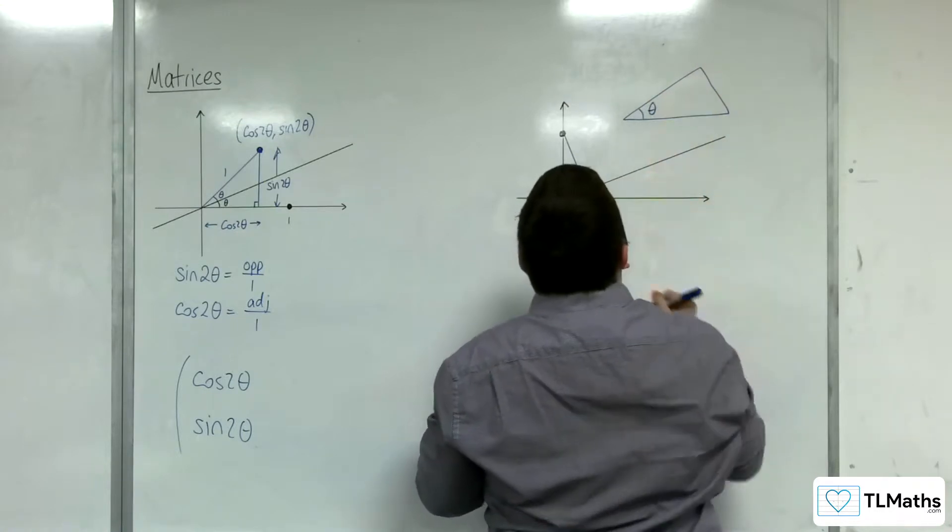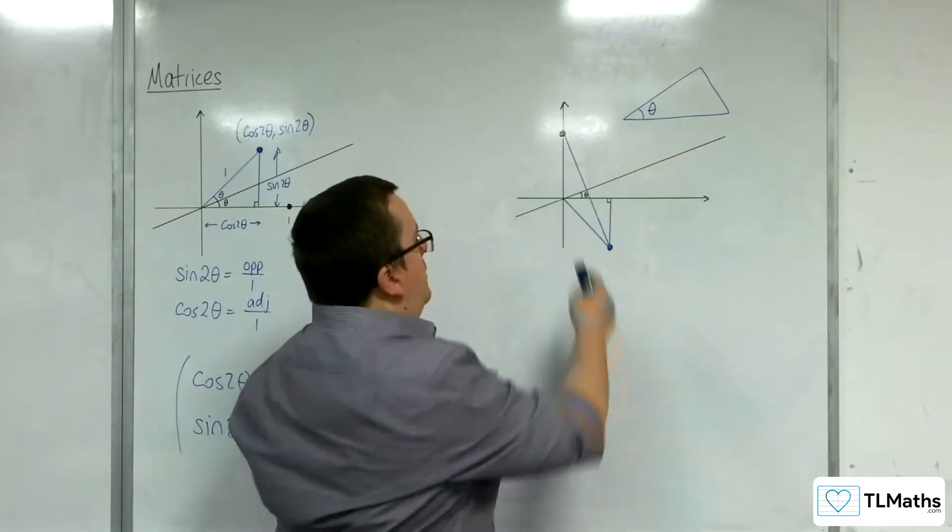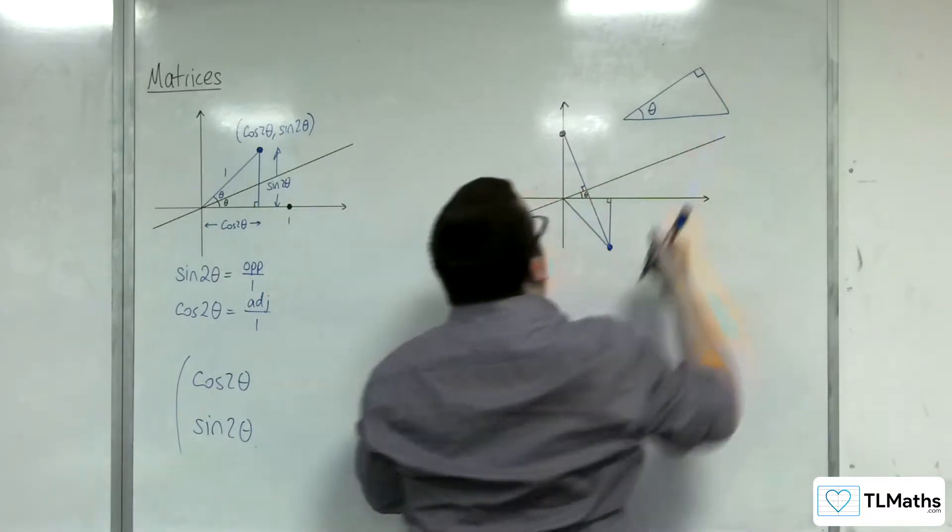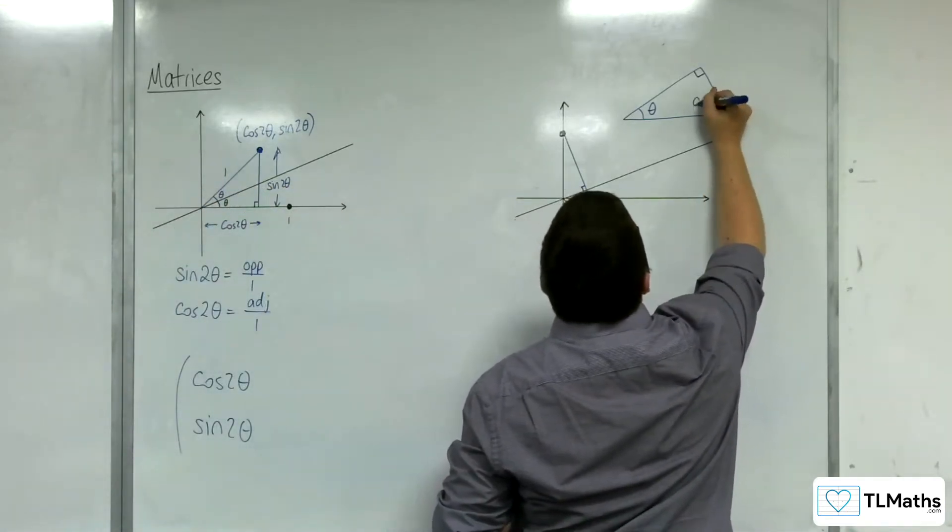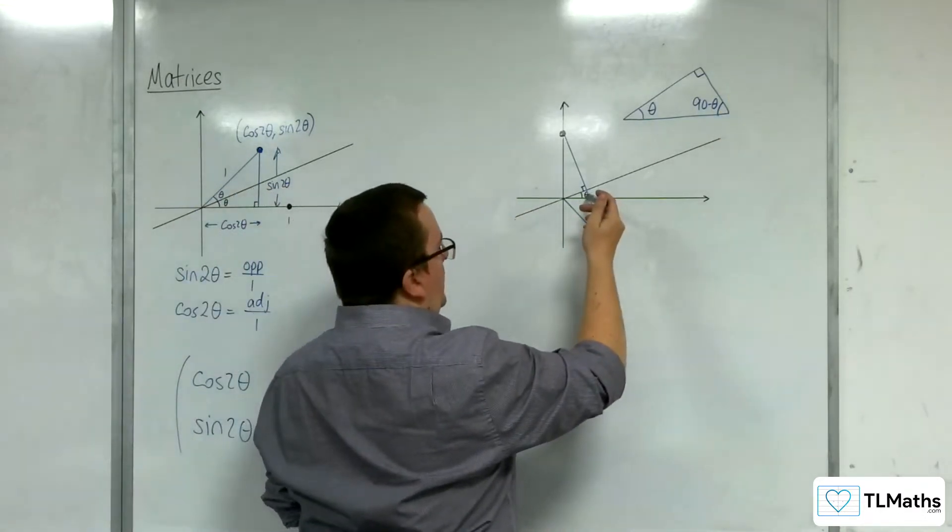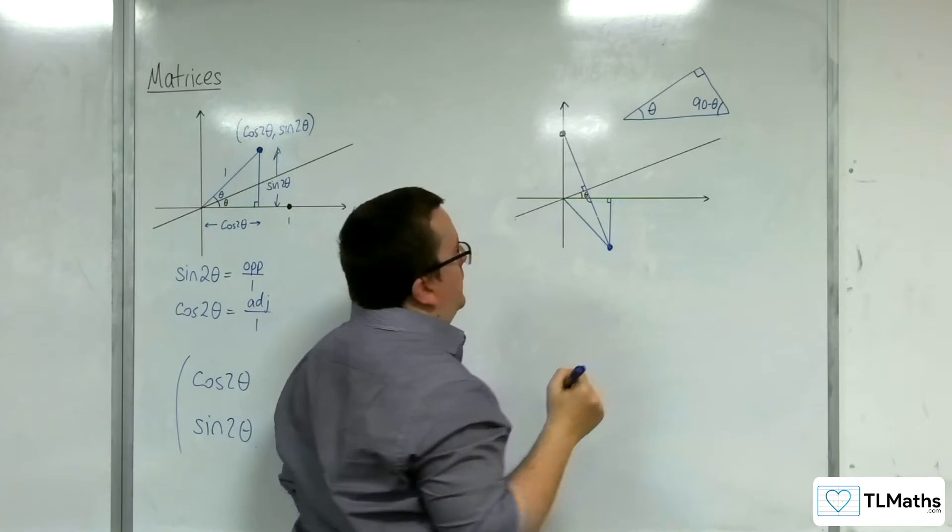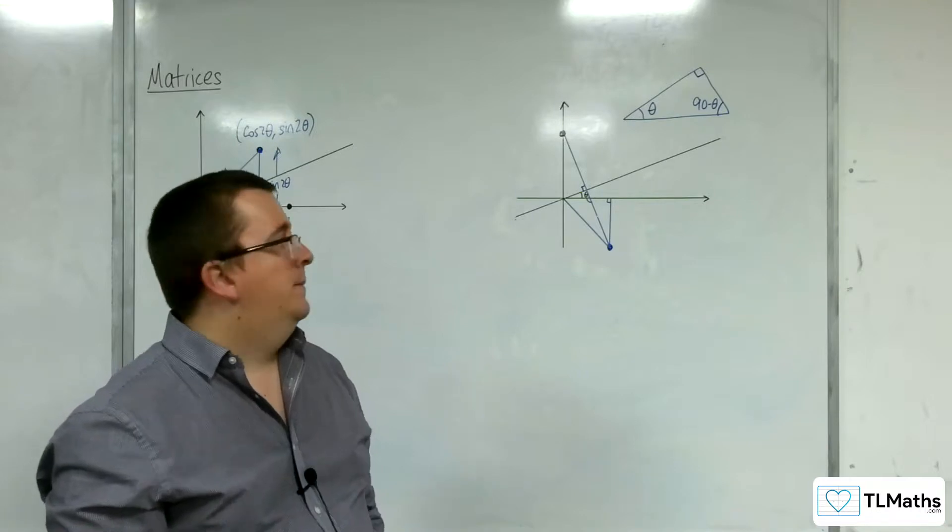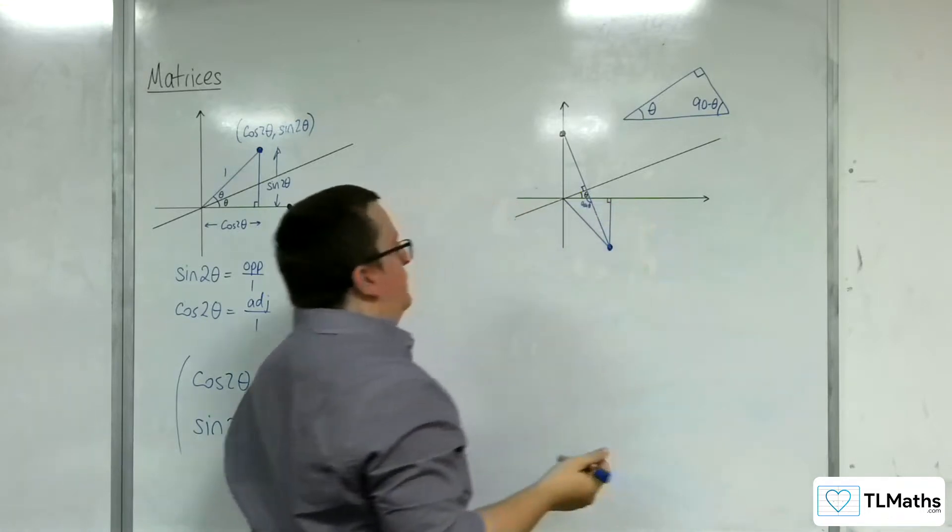This little triangle looks like this, with angle theta. What's important to recognize is that because that line is a mirror line, this line is perpendicular, making a right angle. So this angle will also be a right angle. That means this angle inside must be 90 take away theta. So this angle here must be 180 take away 90 take away theta, which is 90 plus theta.